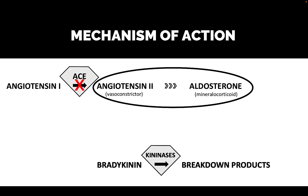Angiotensin 2 is a potent vasoconstrictor. If you constrict a blood vessel, it's just like if you pinch a hose — the pressure inside goes way up. Also, aldosterone is a mineralocorticoid, meaning it promotes the retention of sodium, which leads to fluid retention. Fluid retention means the volume of fluid inside the blood vessel is increasing, so that's also putting pressure on the blood vessel.